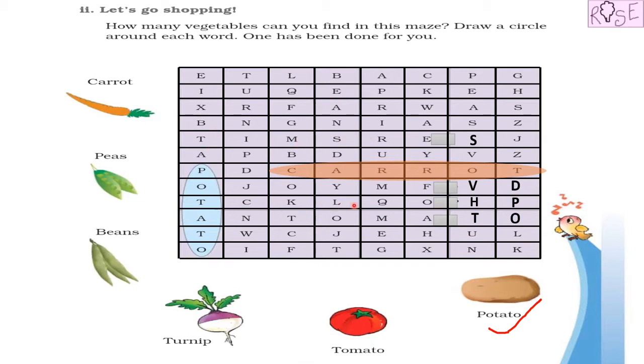We found another vegetable, carrot. Wow! Let's move on to the next one. Peas. Where is peas in this maze? So here is it. See, P-E-A-S. We found this vegetable as well.